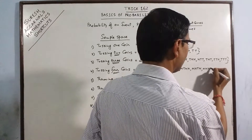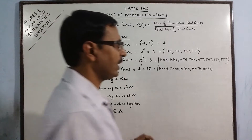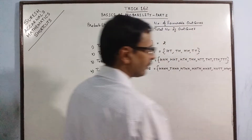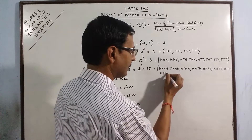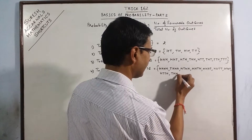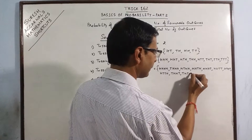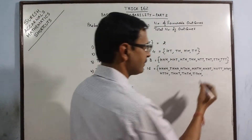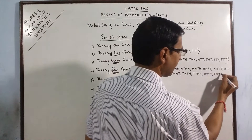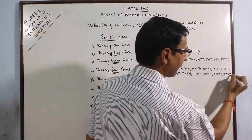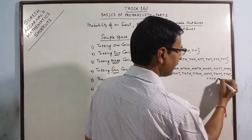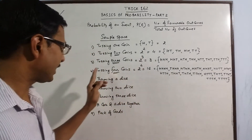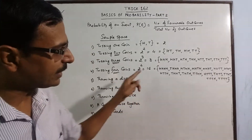Now come to 2 heads. You have 2 heads on the 1st and 2nd place, 1st and 3rd place, 1st and 4th place, 2nd and 3rd place, 2nd and 4th place, and 3rd and 4th place. Then single head: 1st place, 2nd place, 3rd place, 4th place. And finally no heads, that is all 4 tails. So if you count, this gives 16 possible outcomes related to the experiment of tossing 4 coins.